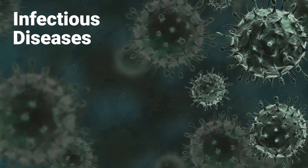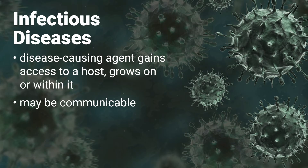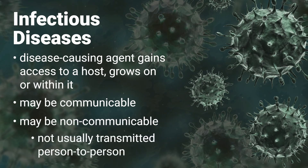Infectious diseases happen when a disease-causing agent like a virus or bacterium gains access to a host, like a human body, and grows on or within it. Some infectious diseases may be communicable and can spread person to person. Some infectious diseases are non-communicable, which means they are not usually spread from person to person.